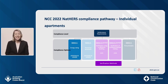As with NCC Volume 2, the NatHERS pathway by itself is not sufficient to show compliance with J1 P3. You will still have to demonstrate elemental energy efficiency requirements for both air conditioning and ventilation, including equipment servicing the apartment and lighting. This can be done through parts J6 and J7, which were known as J5 and J6 in 2019.